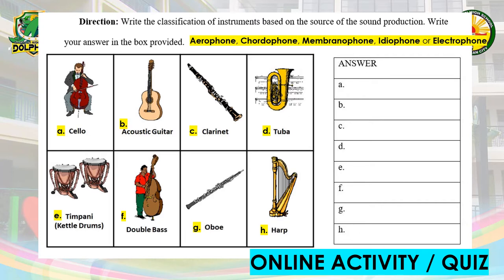Ready? Letter A — Cello. Letter B — Acoustic guitar. Letter C — Clarinet. Letter D — Tuba. Letter E — Timpani or kettle drums. Letter F — Double bass. Letter G — Oboe. Letter H — Harp. We are going to check your answers later after the discussions.